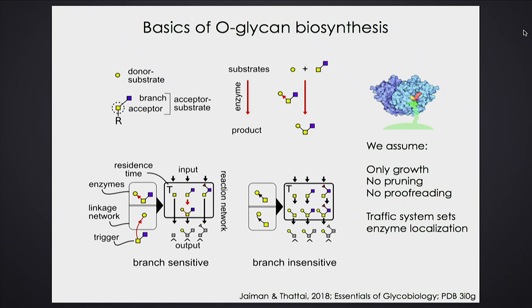All chemical reactions happen at some probability per unit time, so every enzymatic reaction happens at some rate α. The probability of happening in time dt is α·dt. The transfer of the protein from one plate to the next is also a stochastic process happening at some rate β per unit time. It's a big Markov chain.